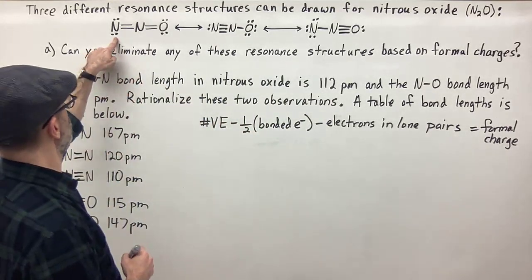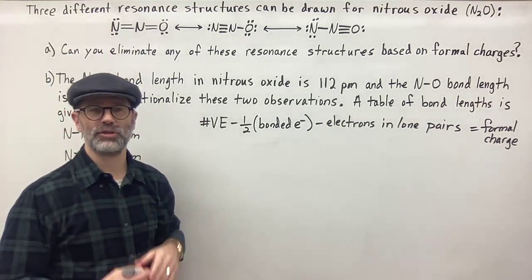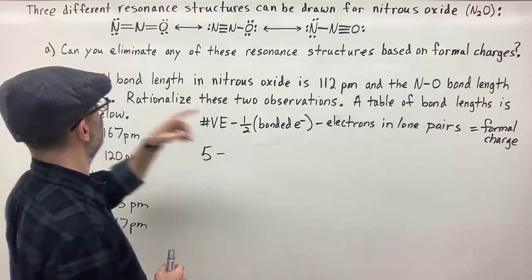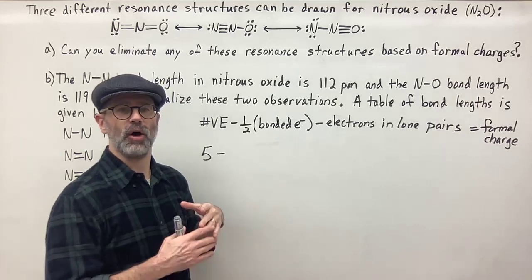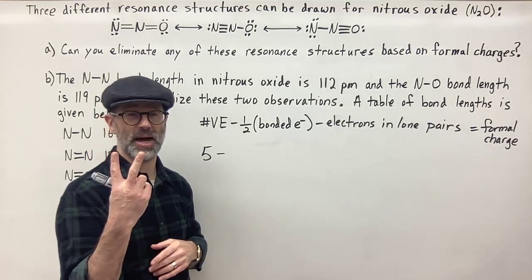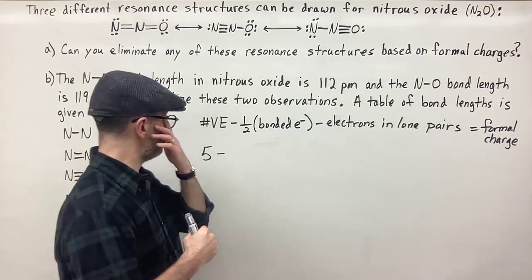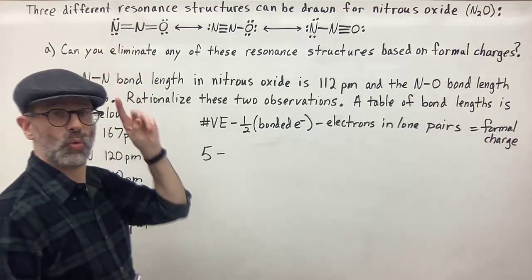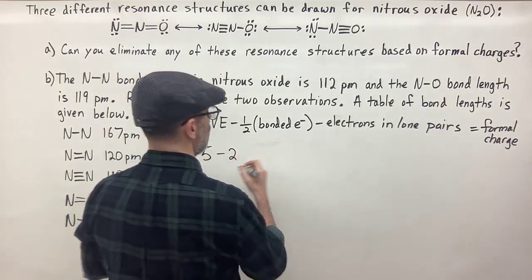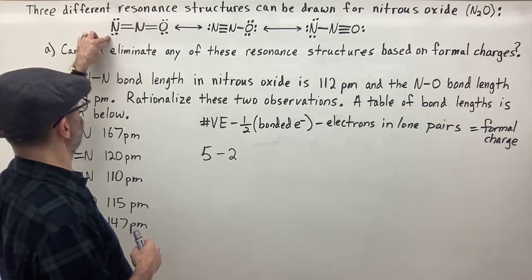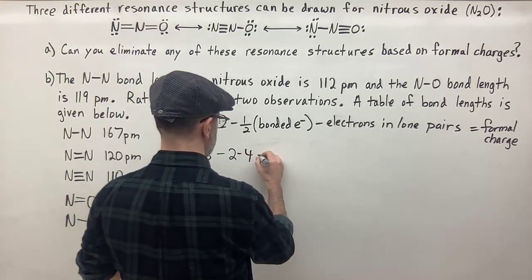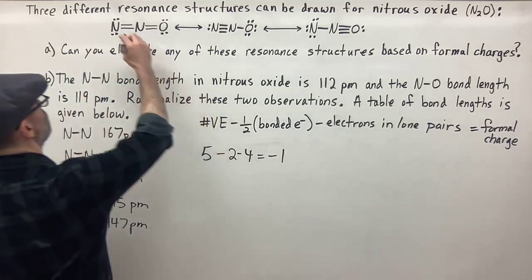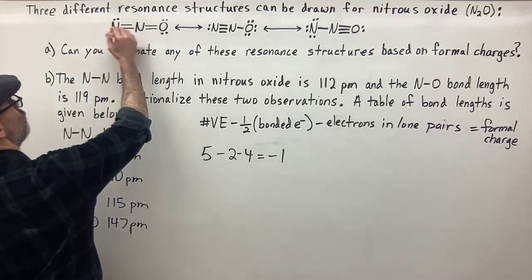For nitrogen in the first structure — nitrogen has five valence electrons because it's in group five. One-half of bonded electrons is basically one electron per bond. Here I have two bonds, so I subtract two. Then I subtract any lone pairs — two lone pairs is four electrons, so subtract four. Five minus two minus four equals minus one. So the formal charge on this nitrogen is minus one.